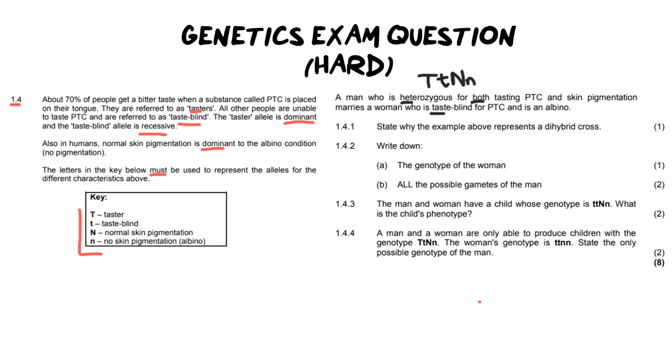Marries a woman who is taste blind for PTC and is albino. Now if she's taste blind we've established that to be taste blind you need to have two recessive alleles because it's a dominant condition. And in order to have albinism because it is a recessive condition you also need to have two lowercase letters. Now doing this little quick calculation at the beginning makes the exam a lot smoother and easier and you run less of a risk of getting the rest of the question incorrect.